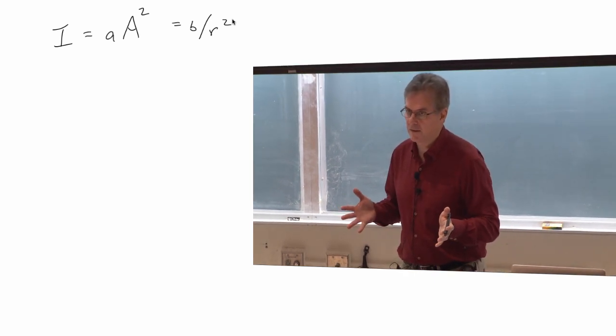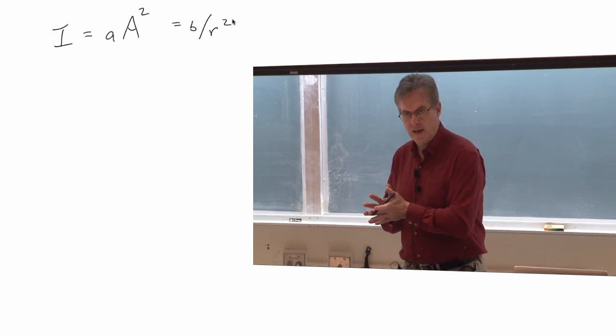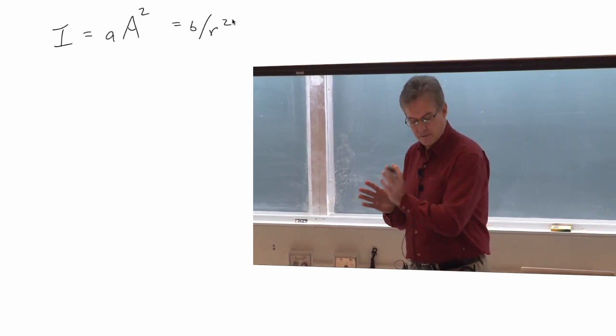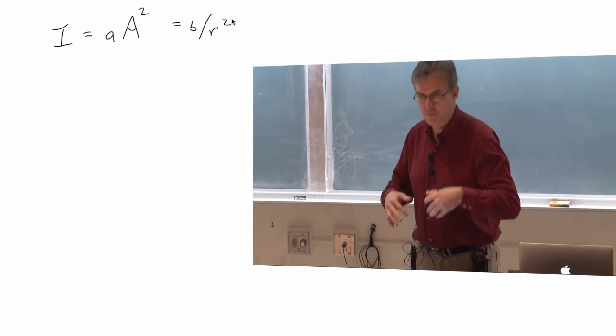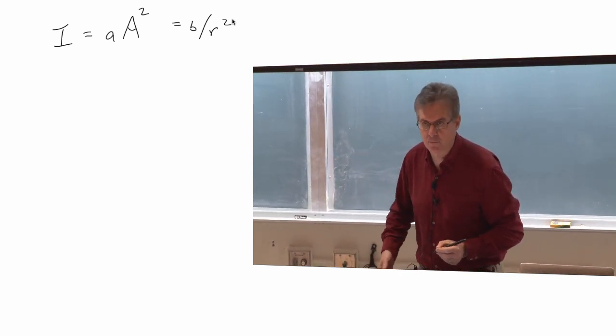It's the same intensity, whatever it is, but it's proportional to the amplitude squared, and it's proportional to one over R squared. Proportional to means it's just a constant multiplied by. That's all that proportional to means.